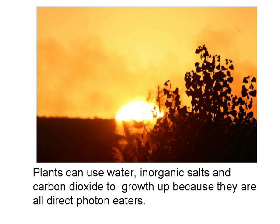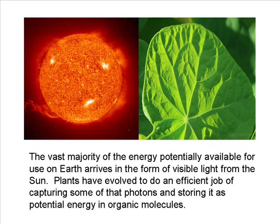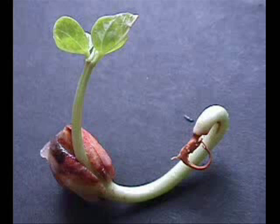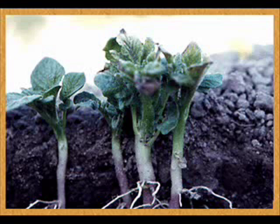Plants can use water, inorganic salts, and carbon dioxide to grow because they are all direct photon eaters. The vast majority of the energy potentially available for use on Earth arrives in the form of visible light from the sun. Plants have evolved to do an efficient job of capturing some of those photons and storing it as potential energy in organic molecules.